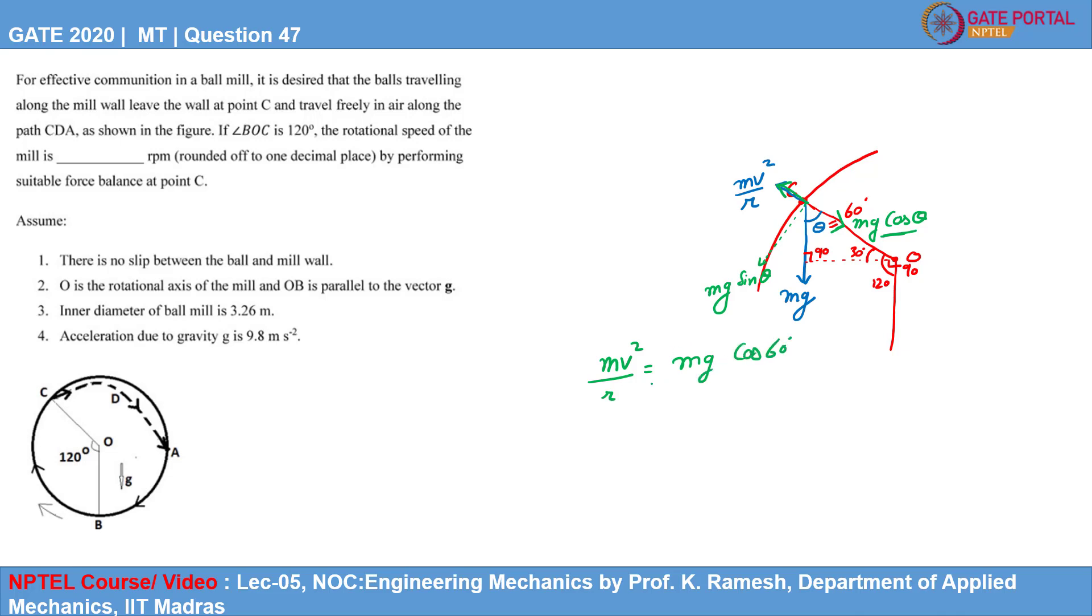We can cancel M. From here, we can calculate the velocity. Velocity will be G into R cos theta is 0.5, and since it is V squared, it will be under root GR times 0.5.